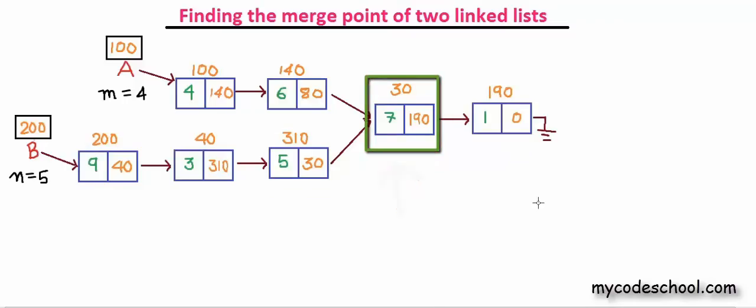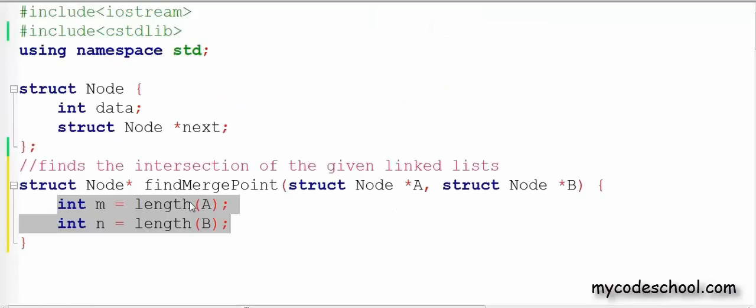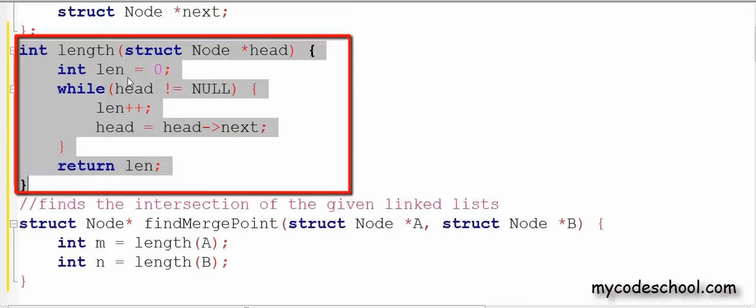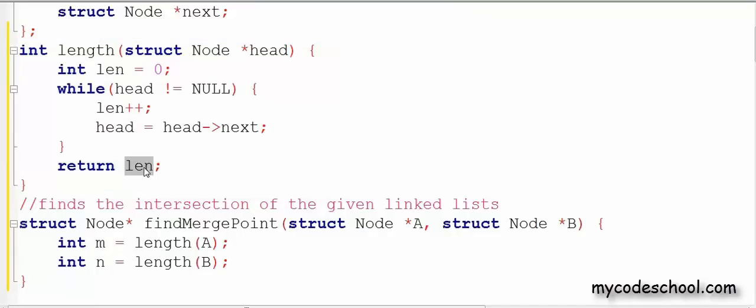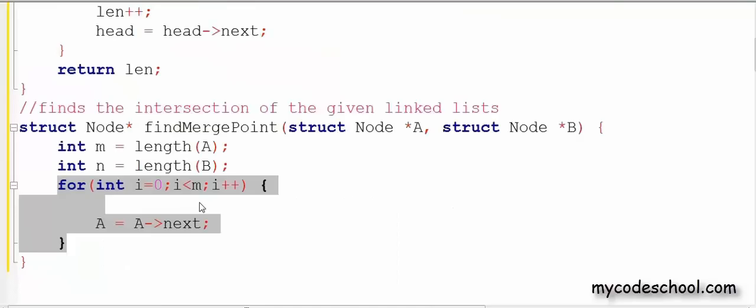Now let us code this brute force solution. We firstly need to find the lengths of both the lists as M and N. To find the length I have written this function which basically traverses through all the nodes of a list and increments a counter every time. Finally we return this counter.